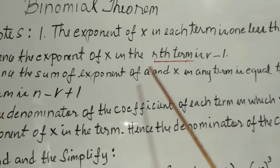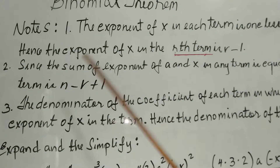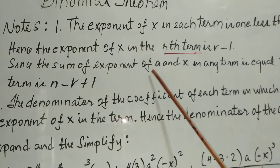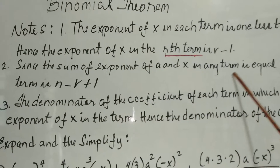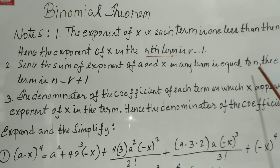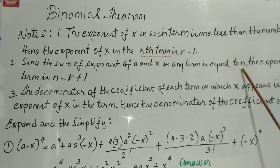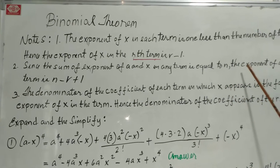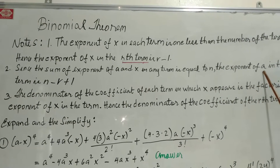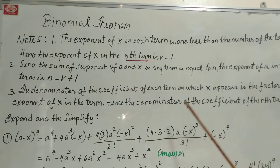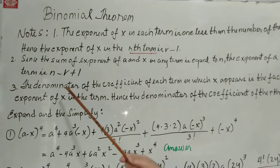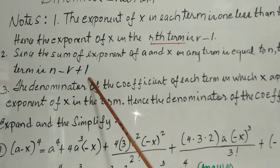Since the sum of the exponents of a and x in any term is equal to n, the exponent of a in the r-th term is n minus r plus 1.